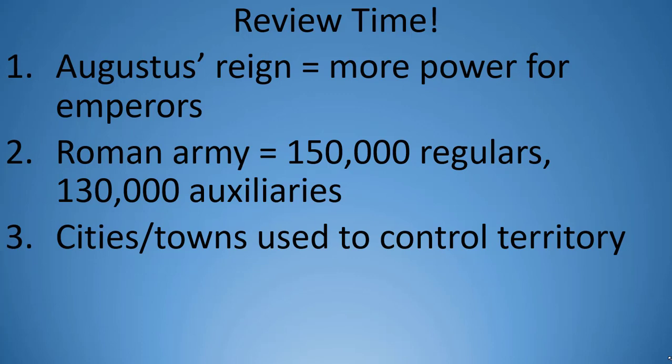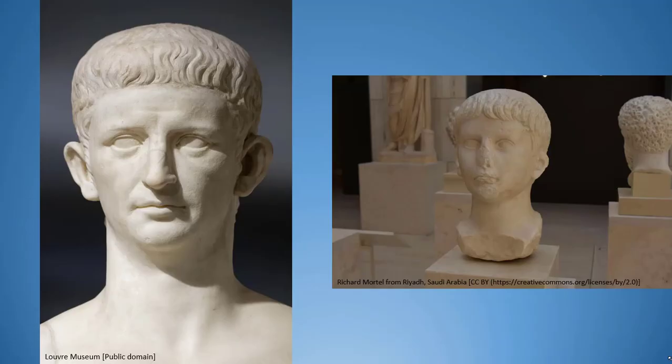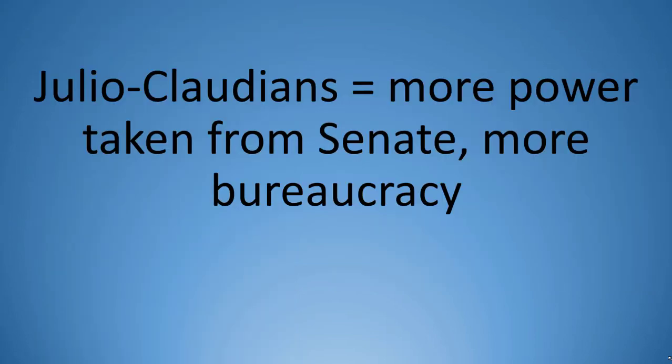Augustus died in 14 CE and the next four emperors were either related to Augustus or to his wife. They became known as the Julio-Claudians and included Tiberius, Caligula, Claudius, and Nero. The four ruled from 14 to 68 CE and continued the process of consolidating power by removing even more power from the Senate and creating another bureaucracy to handle many of the affairs the Senate used to take care of.